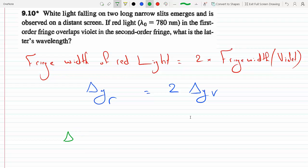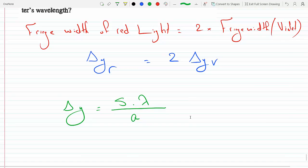Delta y, this is for the double slit experiment, is the change in the width or the fringe width. It equals s, which is how far the screen is from the source, times the wavelength of the light, divided by a, which is the distance between the two slits.